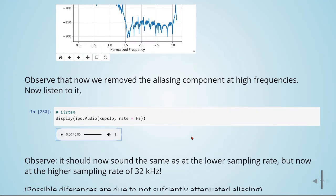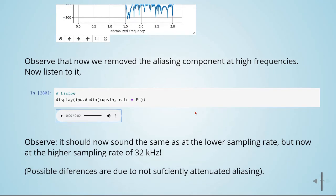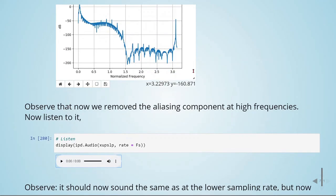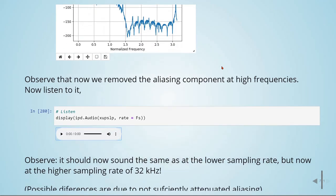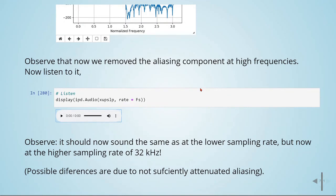It sounds the same as at the lower sampling rate, but now at the higher sampling rate of 32 kilohertz. Sometimes if you use different audio signals to test, you'll find that there could be differences due to not sufficiently attenuated aliasing.